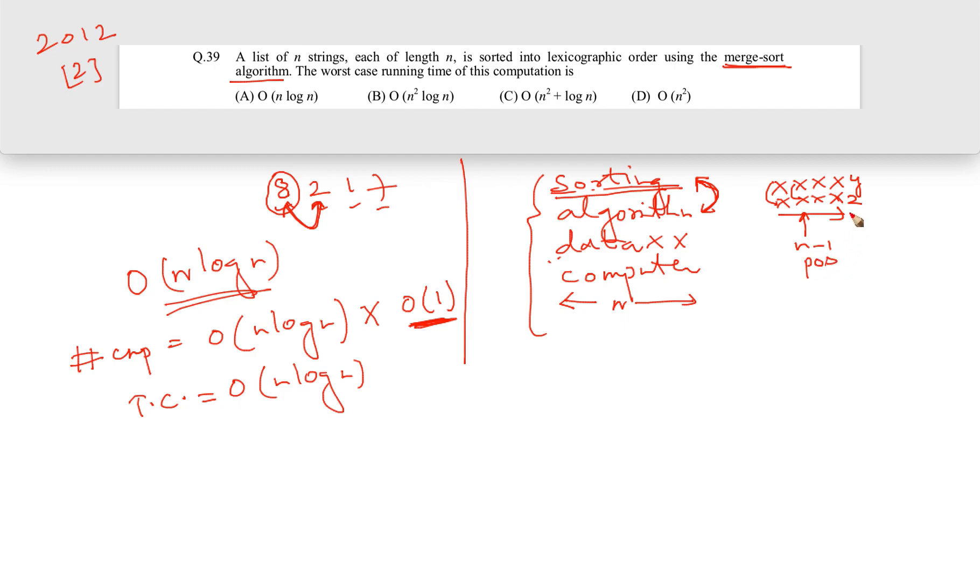So what my claim is: overall, the comparison time for these two elements actually is going to be order of the length, and this length is again given n. That is why it is also going to be order n.